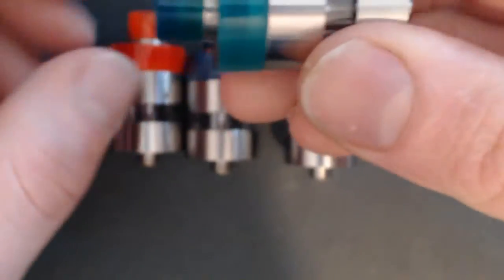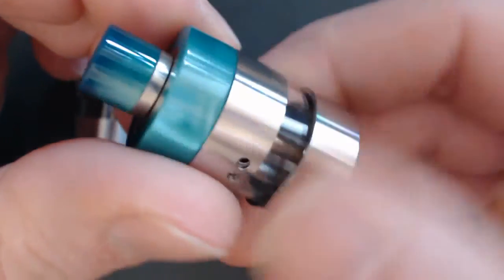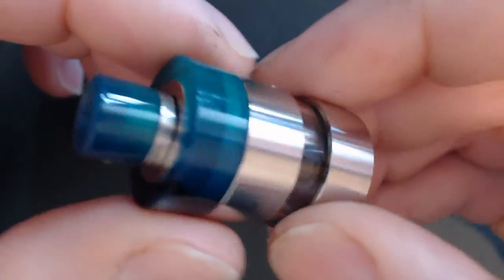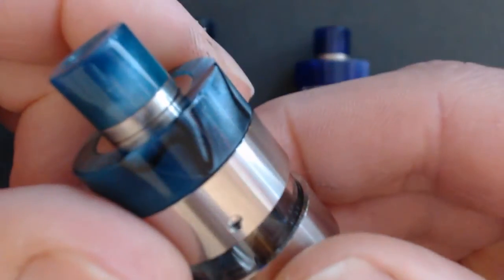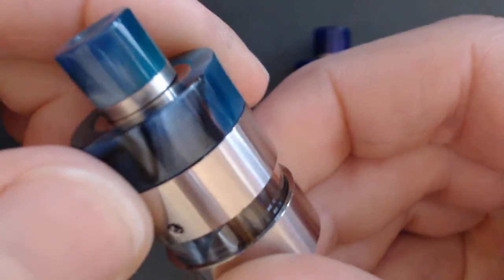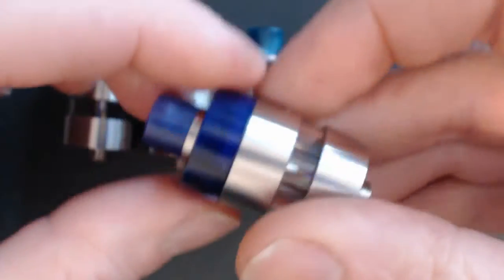This one is what they call the green but has bluey swirls in as well. They're all different, each and every one is completely unique so you'll never get two the same, which is quite nice. And finally the purple one.